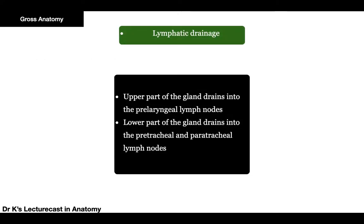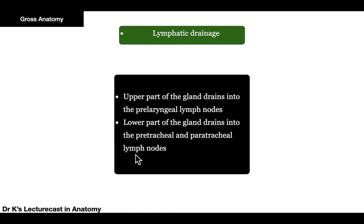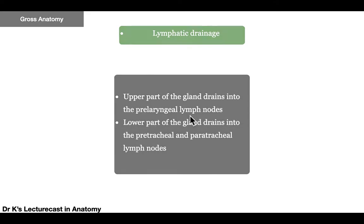Lymphatic drainage: the upper part of the gland — related to the larynx — drains into the pre-laryngeal lymph nodes, while the lower part — related to the trachea — drains into the pre- and paratracheal lymph nodes.